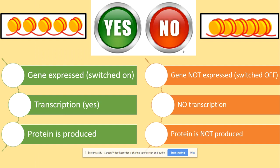Let's have a quick recap on gene expression. If a gene is expressed, transcription can take place and the protein can be synthesised. Looking at the DNA and histones complex — when it is less condensed, the gene is expressed, meaning it's switched on and transcription of the protein can take place. When the gene is not expressed, the DNA and histones complex is more condensed, the DNA is wrapped up around the histones, transcription cannot take place, and we do not have the protein.